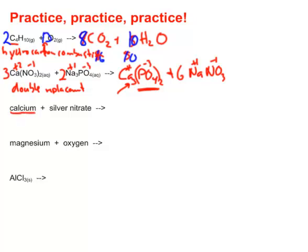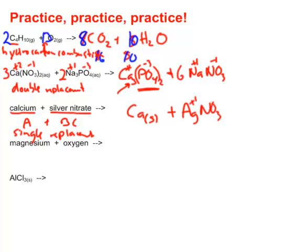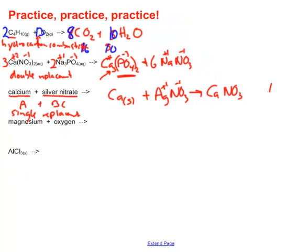Here I have calcium, a metal, combining with silver nitrate, a compound. So this follows the formula of an A combining with BC. This is going to be a single replacement. We're going to trade partners. So we had calcium as a metal, a solid, and we had silver nitrate, AgNO3. Ag is a plus one, nitrate's a minus one. We're going to trade partners so that now we'll get the calcium with the nitrate and the silver by itself. There's solid silver.